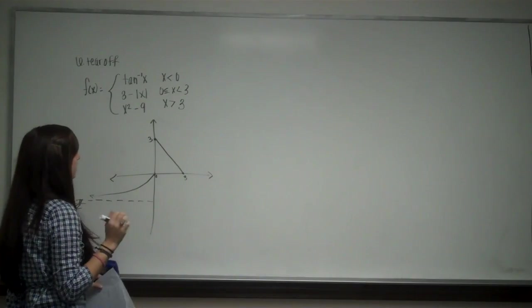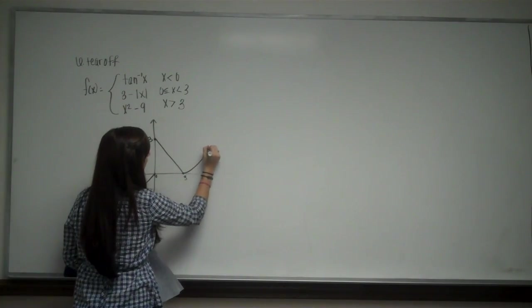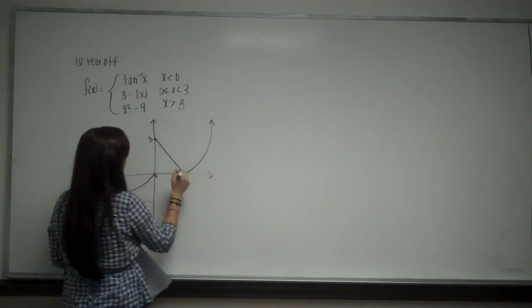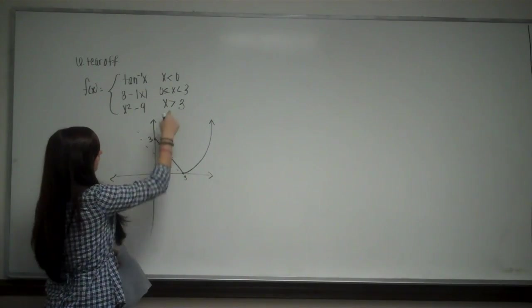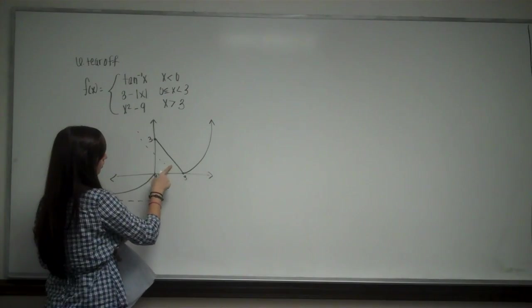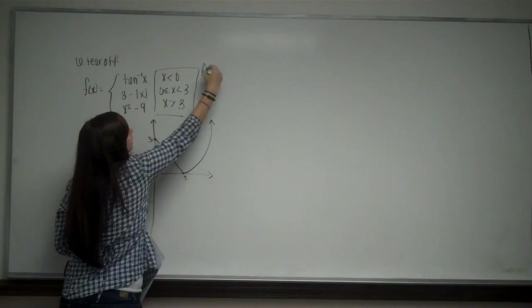And then the last one says x squared minus nine. So that is going to be half of the parabola. Again, I don't draw the whole parabola which would be here. Because it says that x has to be greater than three. So it's very important that you look at these constraints.